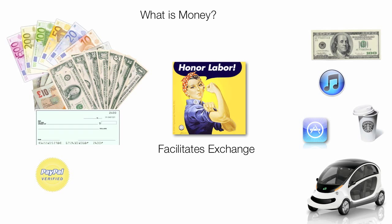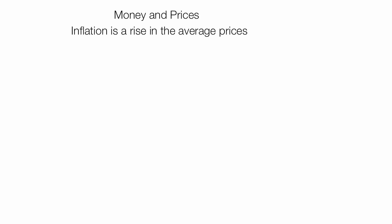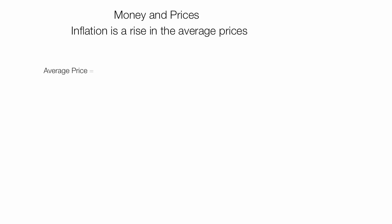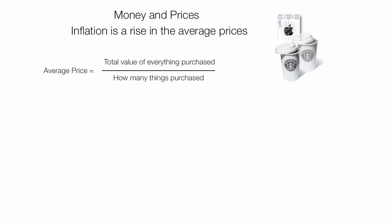Money facilitates exchange and it also makes exchange faster. When we look at inflation, inflation is the rise in average prices. If I plot average price on the vertical axis and time on the horizontal axis, what happens is average prices rise — we'd call that inflation. Average price is equal to the total value of everything you purchased divided by the number of things you purchased.